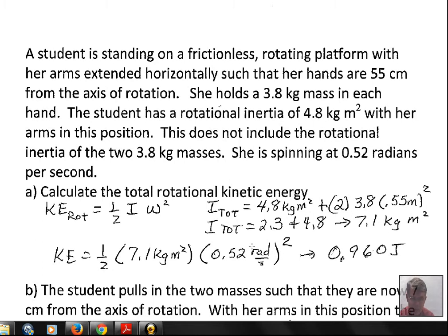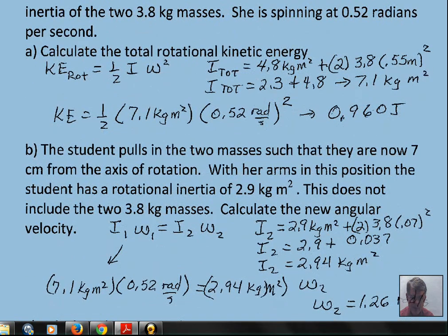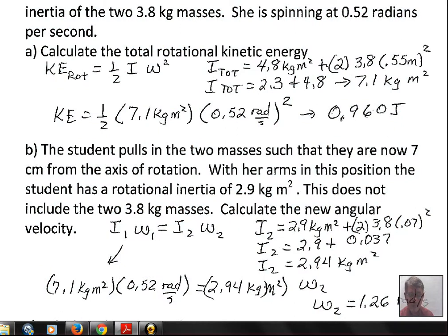The student is able to move the mass a little bit, so the student pulls in the masses horizontally till they are just seven centimeters from the axis of rotation. Now the body's rotational inertia is different, and the rotational inertia of the masses will be different.